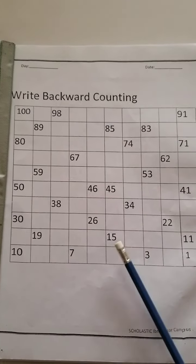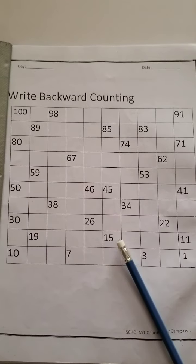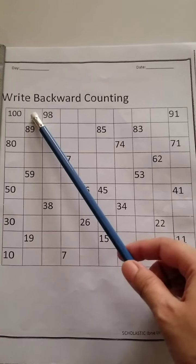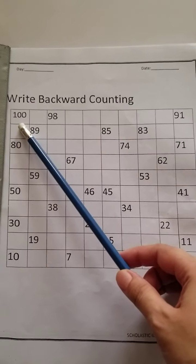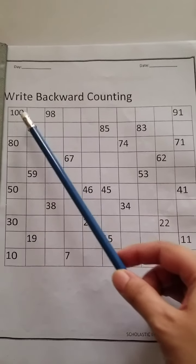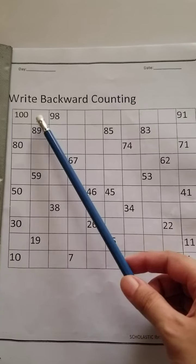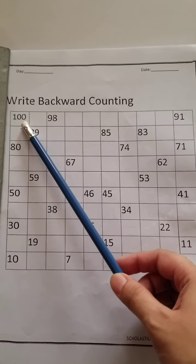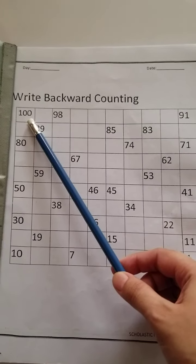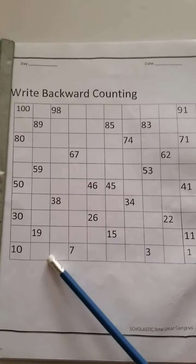four in your math workbook. Okay, so what is backward counting? You have to count backwards. We have to count and write. So what comes before one hundred? Ting ting ting, let's start from that. What comes before